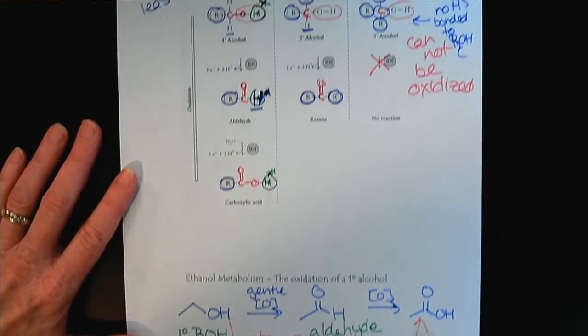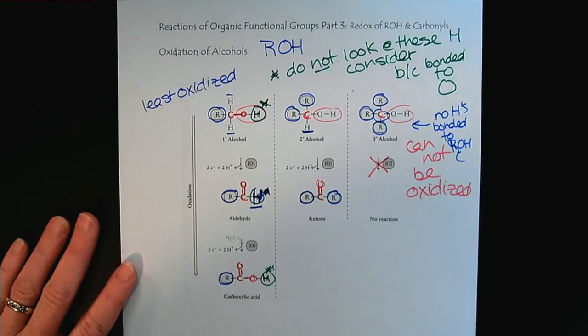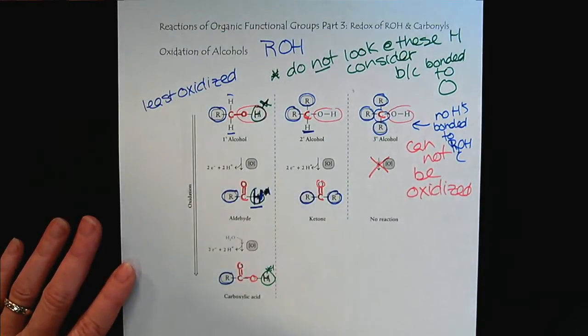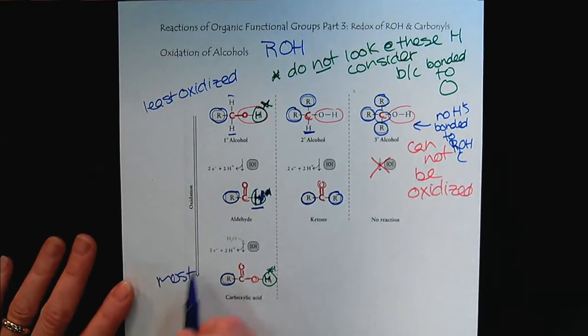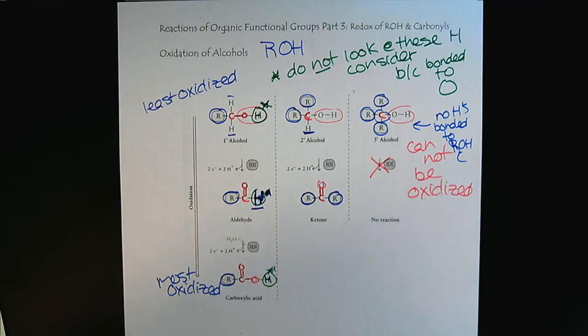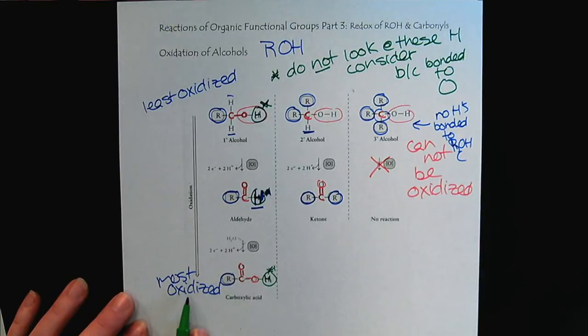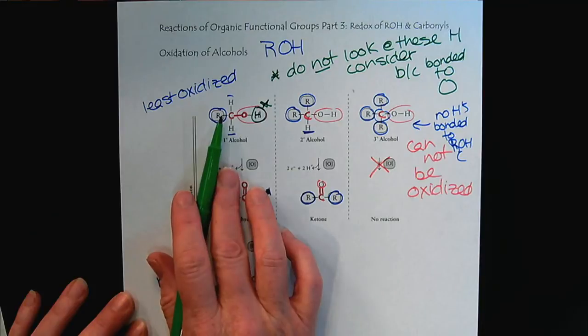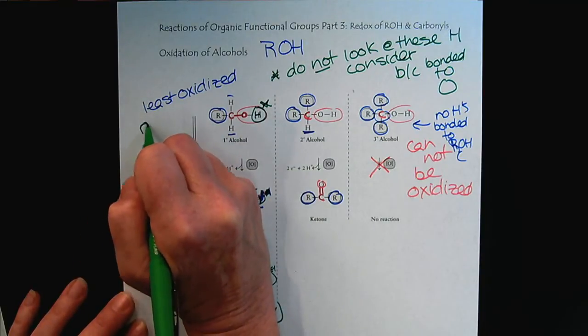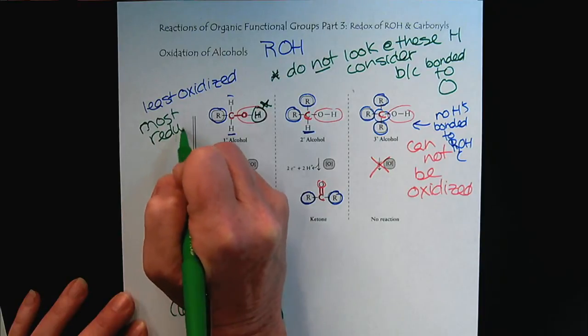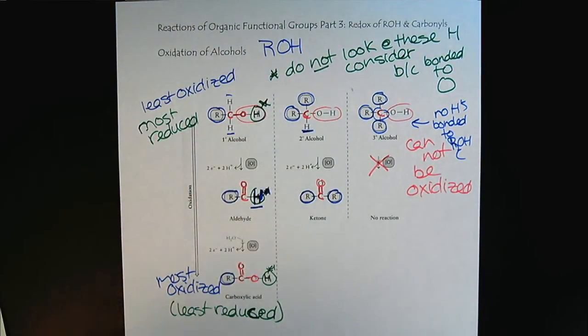So briefly to review, when we look at the carboxylic acids, we would consider those the most oxidized form. Remember oxidation and reduction, you can think of those as complements to each other. If the carboxylic acid is the most oxidized, it would be the least reduced. Likewise, if we consider the alcohols the least oxidized, they would be the most reduced. You want to start thinking about oxidation and reduction in this complementary way that the extremes will always be opposite.